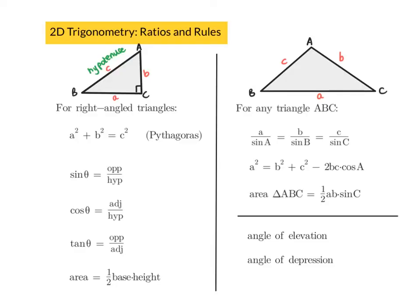As a quick recap, let's look at the trig ratios and rules for triangles. Firstly, if you have a right angle triangle, then you can use the theorem of Pythagoras. You can use the trig ratios: sine is opposite over hypotenuse, cos is adjacent over hypotenuse, and tan is opposite over adjacent. And you can use the area formula half base times height.